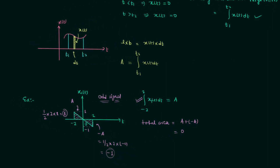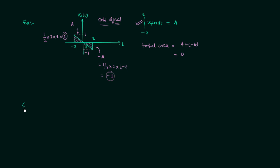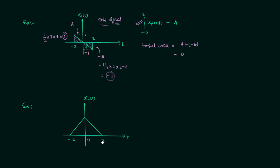In this example we will take another signal, which I will call x2(t). This is the waveform of signal x2(t). From minus 2 to 2, the signal x2(t) exists, and from minus infinity to minus 2, signal x2(t) is equal to zero. The peak value at the origin is equal to 4.